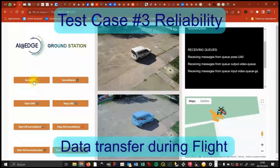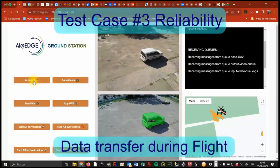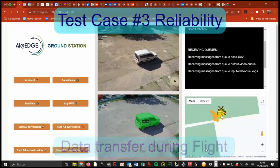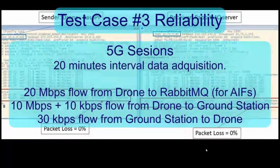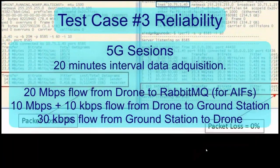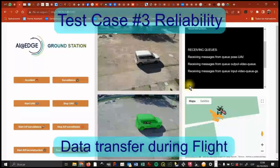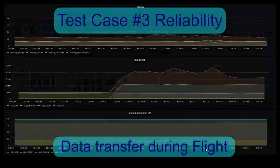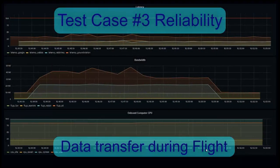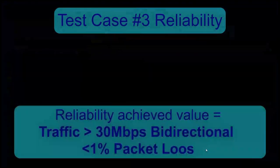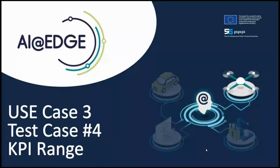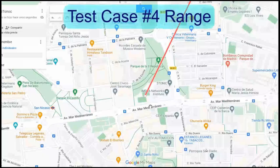The third KPI was for reliability. The goal was to measure possible data package losses, and we consistently measured packet loss below the 1% threshold that was set.